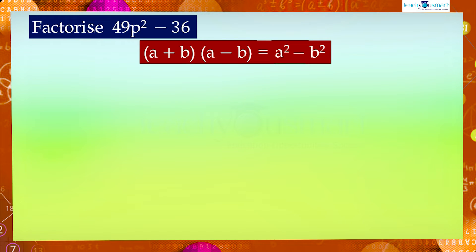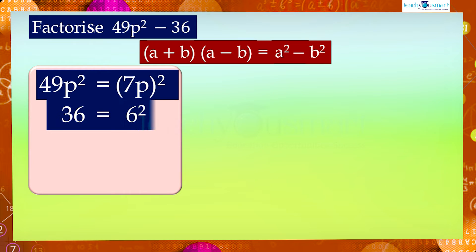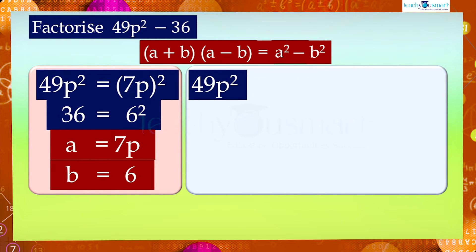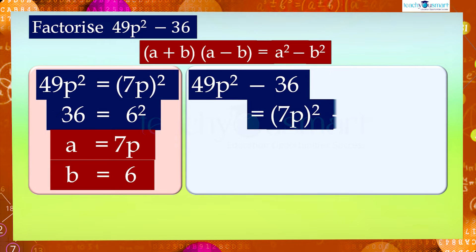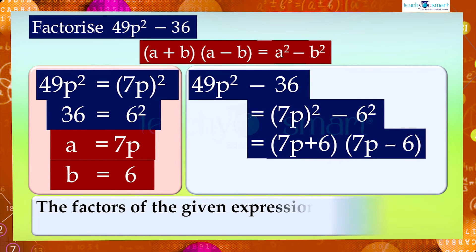Considering the expression 49p square minus 36, we can write 49p square as (7p)² and 36 as 6², that is a equals 7p and b equals 6. Therefore, 49p square minus 36 can be written as (7p)² minus 6², which equals 7p plus 6 multiplied by 7p minus 6. Therefore, the factors of the given expression are 7p plus 6 and 7p minus 6.